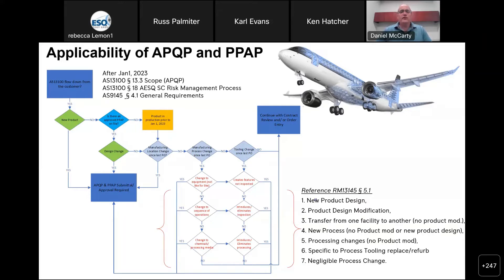There are various elements to consider. If you have product that has not had an existing APQP or PPAP package previously, you would consider that legacy product — unless you've made some changes, or maybe the customer has made some changes to the design. If it's a design change, there are going to be some additional requirements beyond what you'd normally do for product qualification. Or if you've made changes at your own facility regarding the process, inspection, or tooling — those are all to be considered.